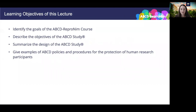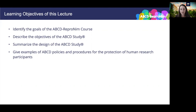This is the first lecture of the ABCD Repronim course. Each lecture throughout the course will begin by identifying its learning objectives. My job in this lecture is to give you some background information about ABCD Repronim itself, and then I will also be describing the objectives of the ABCD study and giving you a bird's eye view of the overall study design. Finally, I would like to highlight how the safety and privacy of our ABCD families is always at the forefront of our attention and give examples of ABCD policies and procedures to ensure the protection of participating youth and their families.